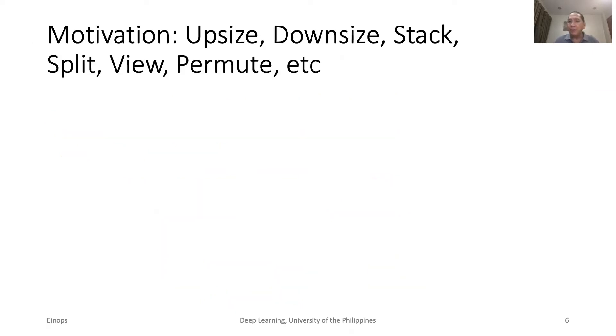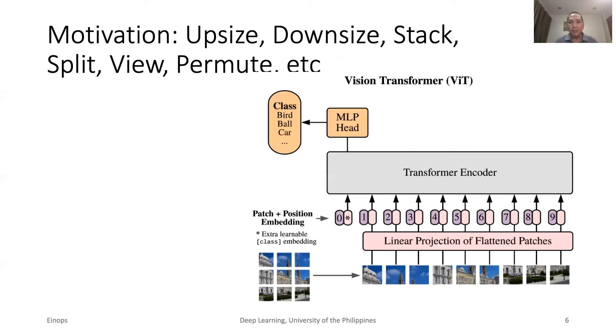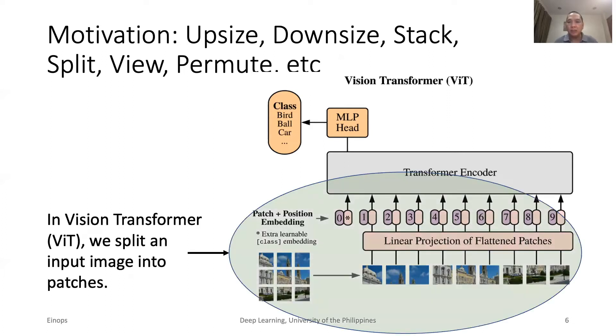There are other tensor operations that may not be straightforward to implement in PyTorch or NumPy. Or, we may have to remember different names and syntax for each of them. Operations such as resizing, stacking, splitting, viewing, and permuting are common in deep learning. For example, in Vision Transformer, an input image is split into a sequence of patches that serves as input to a linear projector.